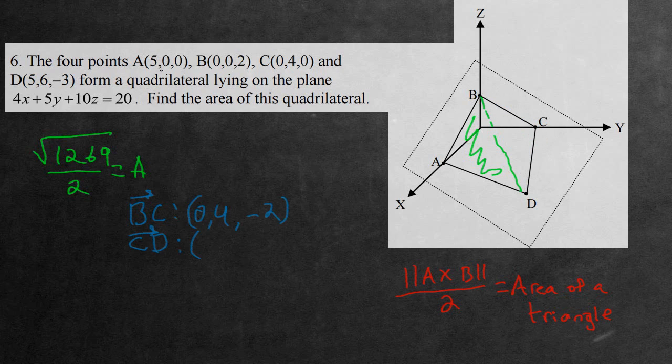D to C, where's that? Five subtract zero is just a five. Six subtract four, two. Negative three subtract nothing is negative three.